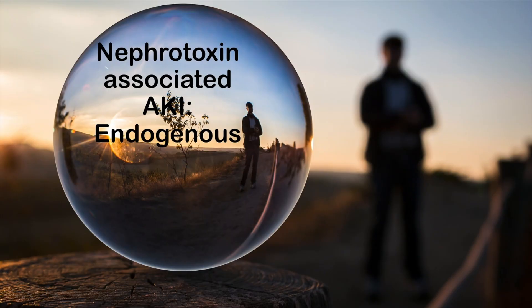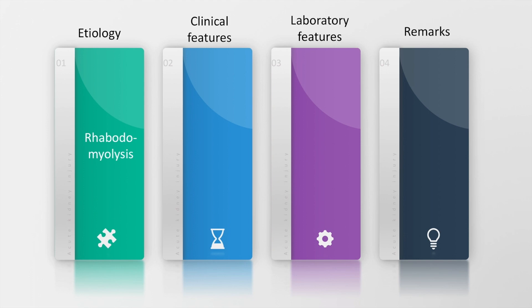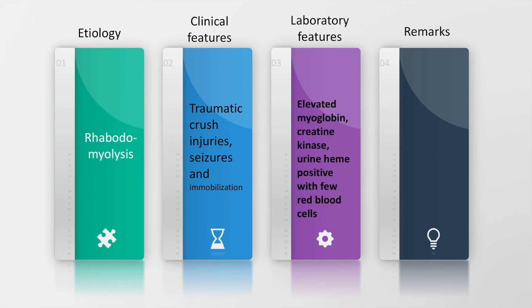Acute kidney injury may also be due to nephrotoxins that come from within the body — endogenous nephrotoxins. An example is rhabdomyolysis, in which the patient may have had a traumatic crush injury, seizures, or immobilization. Labs will show elevated myoglobin, creatine kinase, and urine heme positivity may be present.